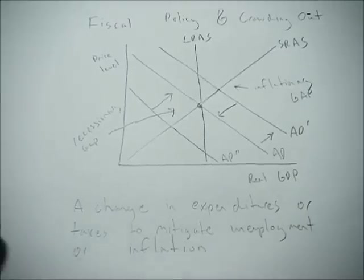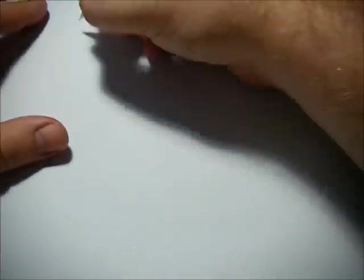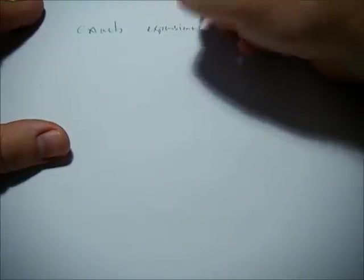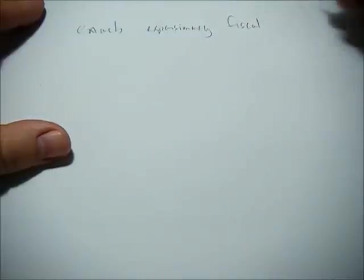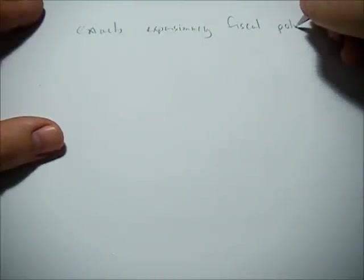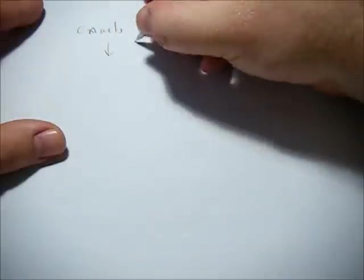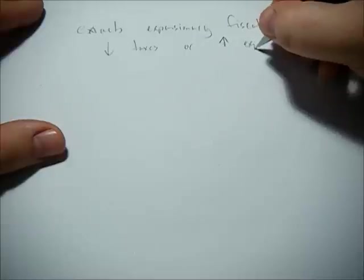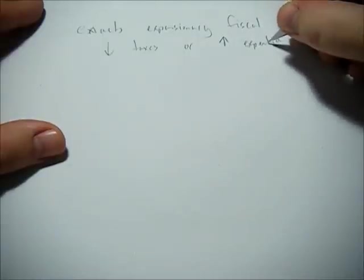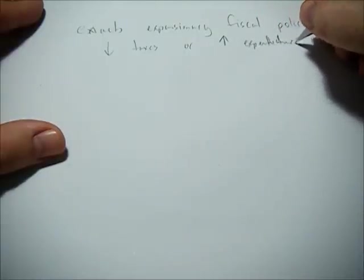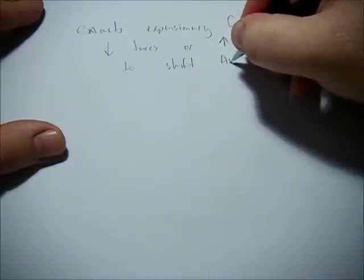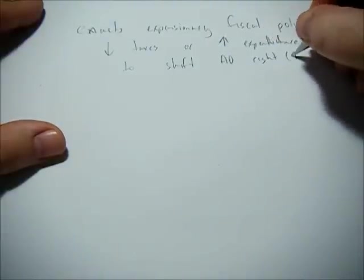So what happens when the federal government enacts expansionary fiscal policy? Expansionary fiscal policy is a decrease in taxes or an increase in expenditures to shift aggregate demand right, or to increase it.